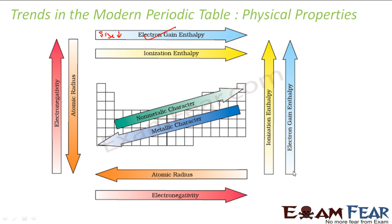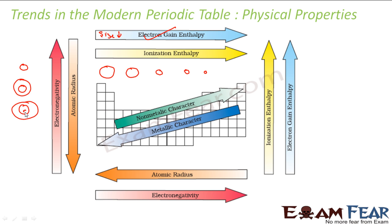Similarly, if you go from top to bottom down the group, electron gain enthalpy increases. Why? Because as you go down the group, one extra shell is added and the size increases. However, going across the period the size of the atom is decreasing, so the nuclear attraction power increases, making it easier to gain an extra electron — so the electron gain enthalpy is increasing.